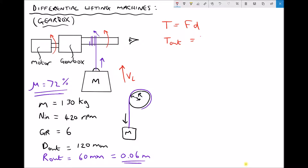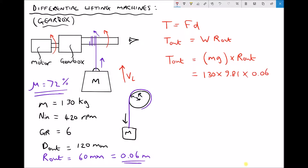So t_out equals the weight of the mass (since we're working with forces) times the radius of the output shaft. Weight is mass times gravity, so t_out equals mass times gravity times r_out. Working in SI units: 130 kg times 9.81 times 0.06, giving us a torque of 76.52 Nm applied to the output shaft. The SI units of torque are newton meters.